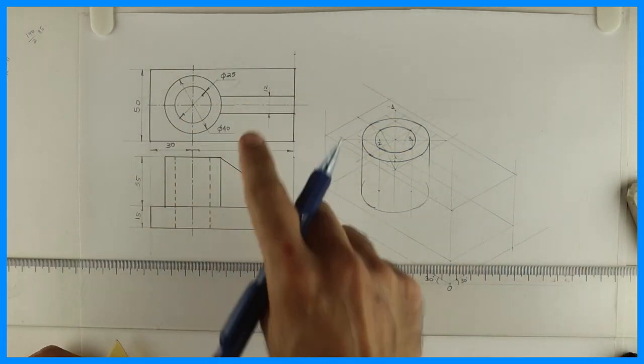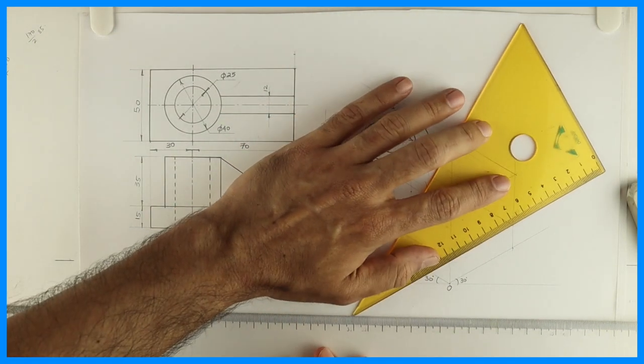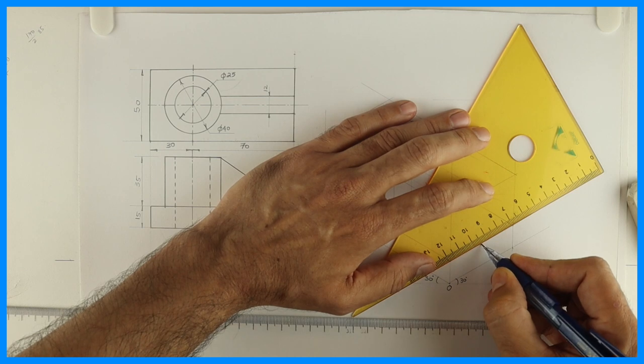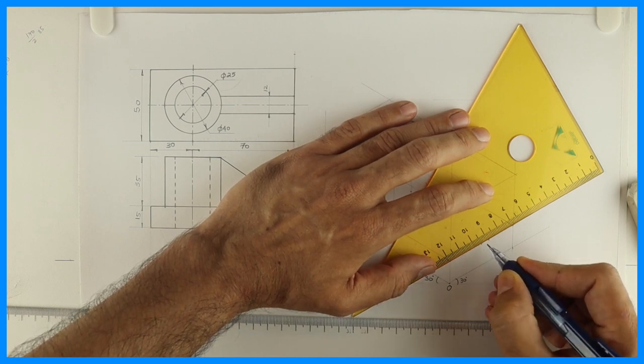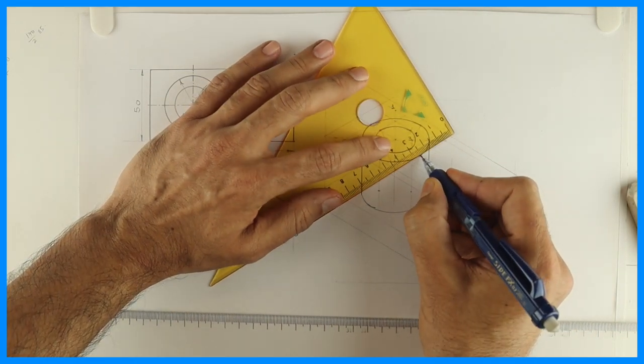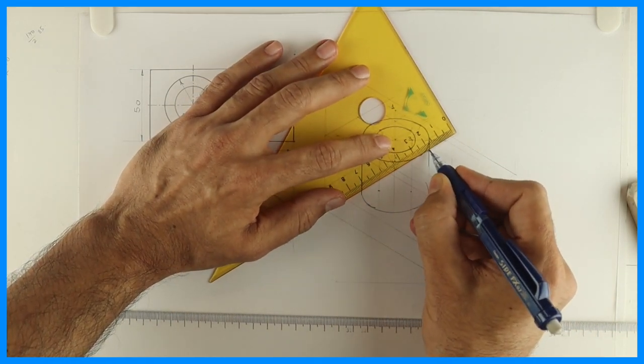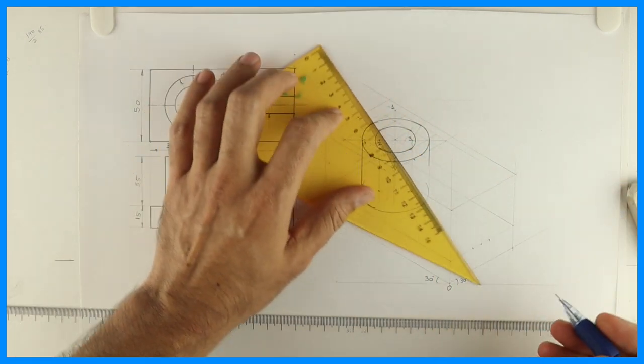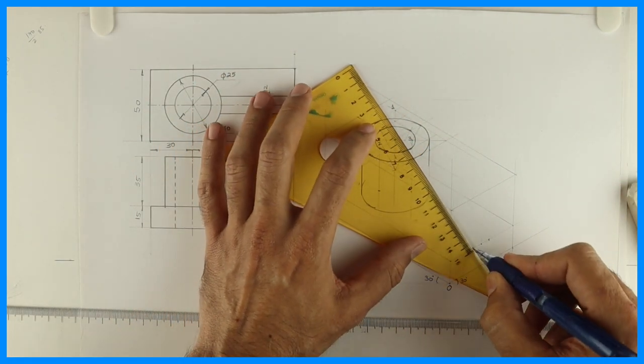Now we need to draw this slope. How much it is? 12. So from center, we will take 66 mm. Same. On the bottom plate as well as on the circular part. We will take 66 mm. And we will join this. So we will get that slope.